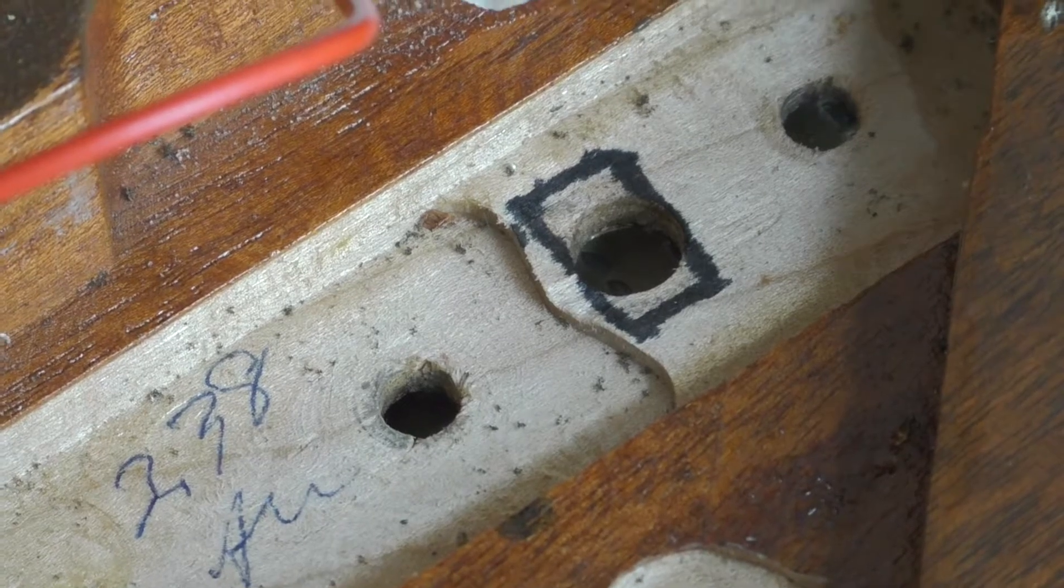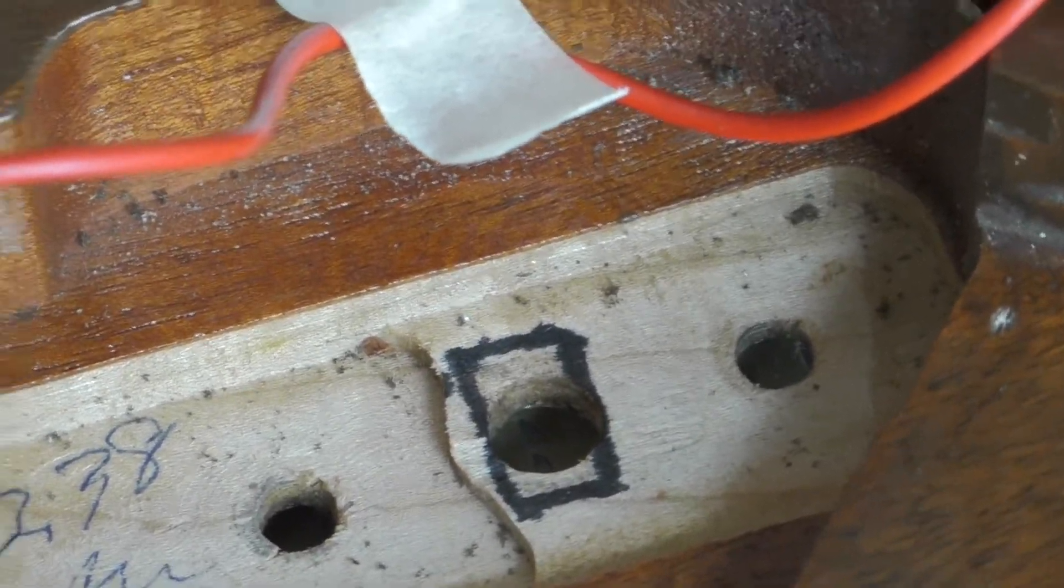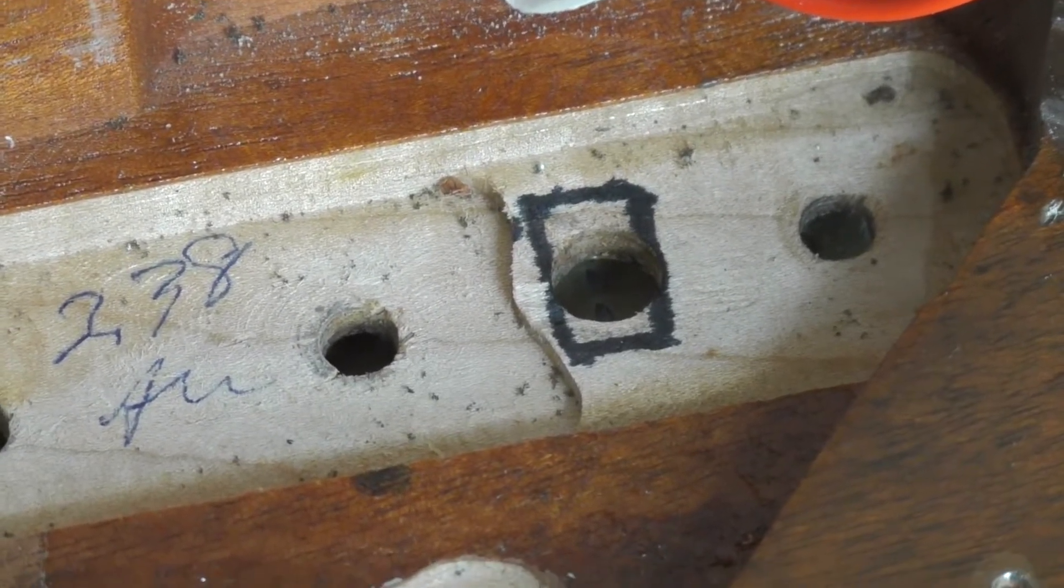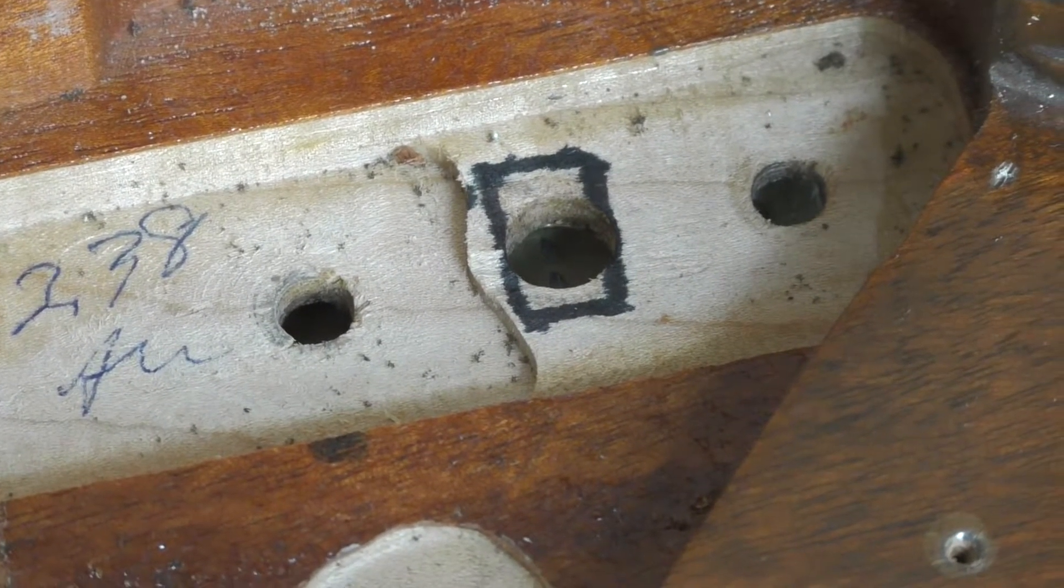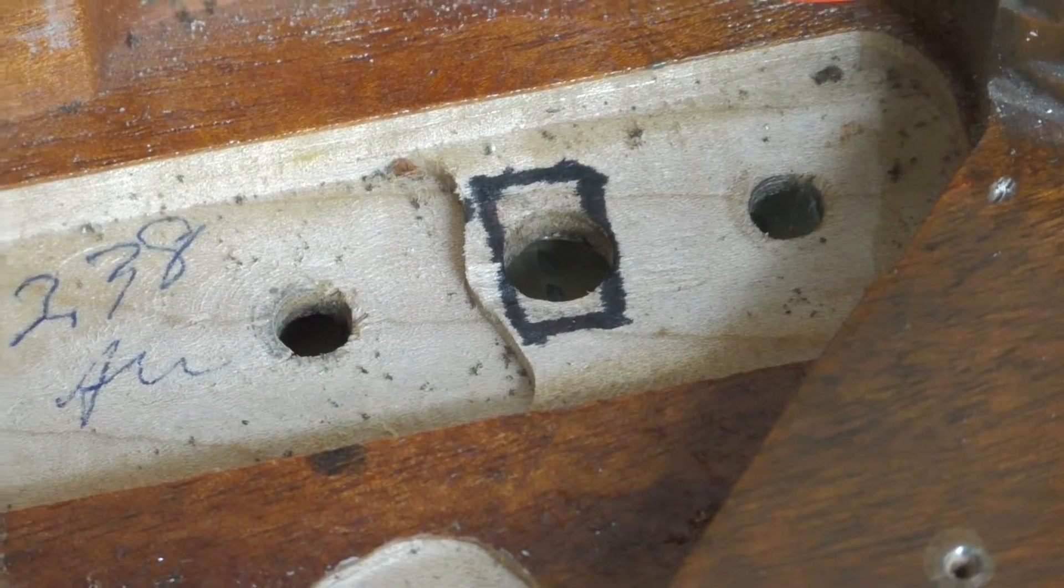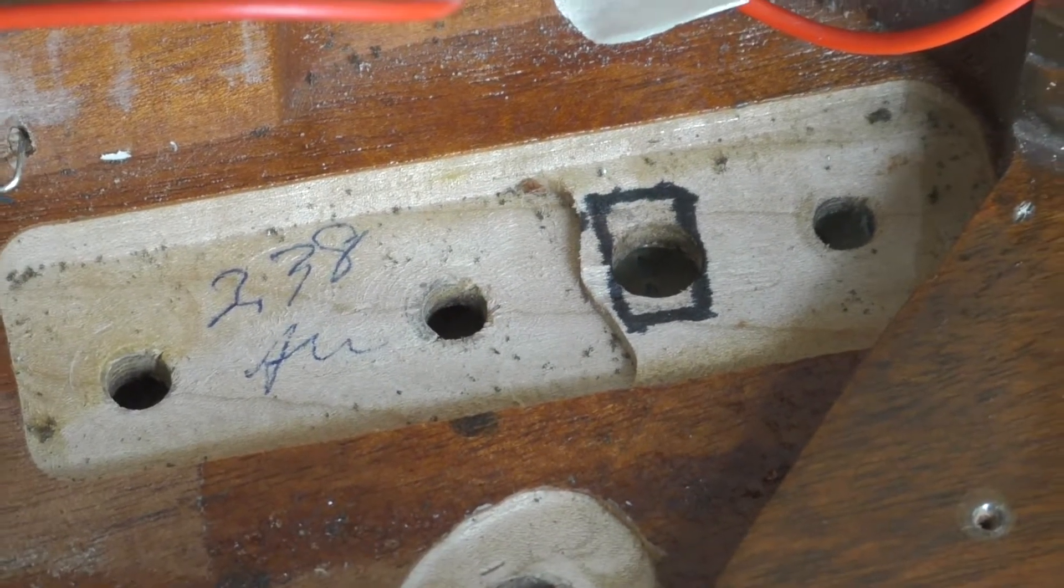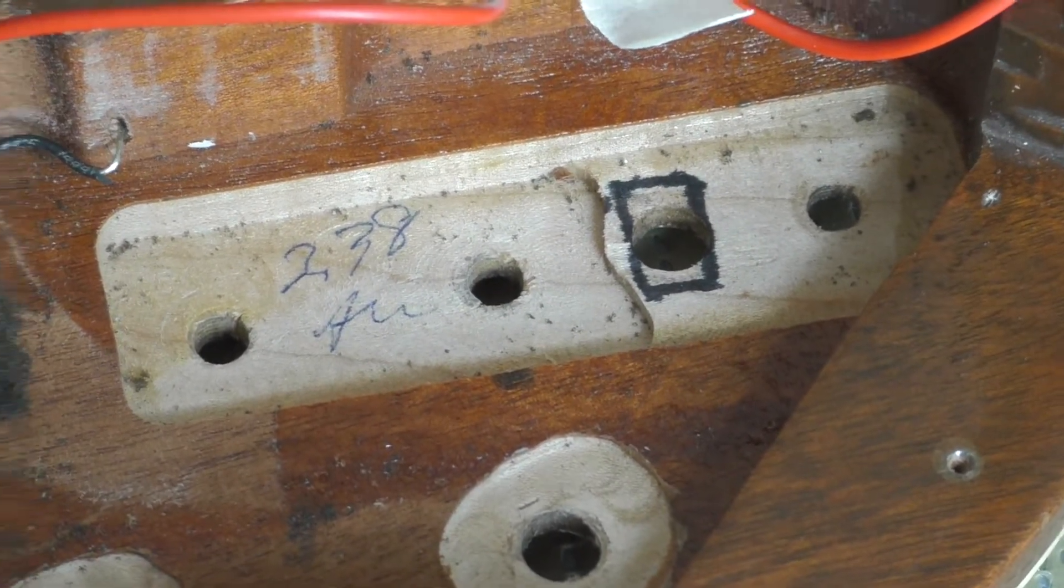So I've marked around the mode switch with the sharpie marker, and my plan is to get out a Dremel tool and see if it's too much trouble to maybe route a little bit of that wood away to give a little bit more depth to mount that mode switch. We'll see how it goes from there.